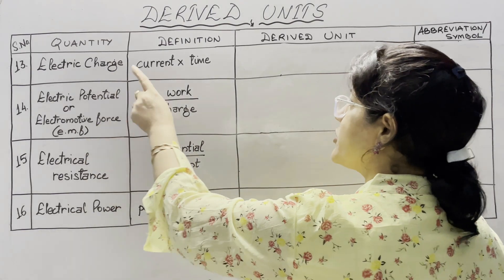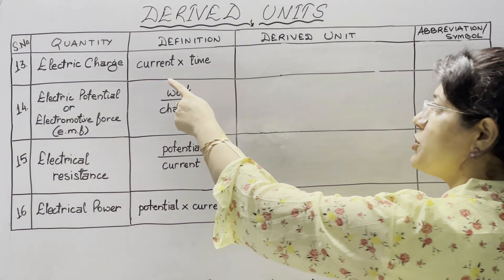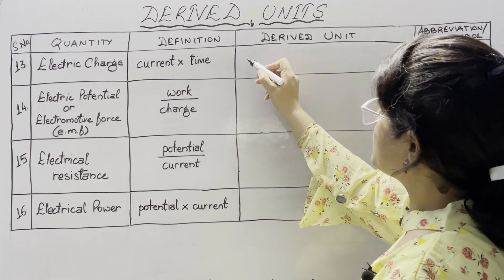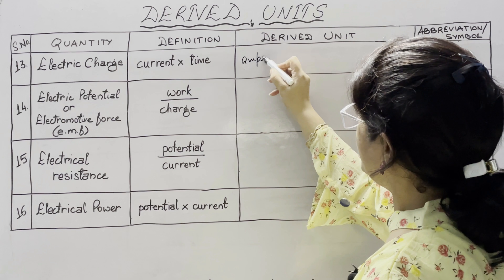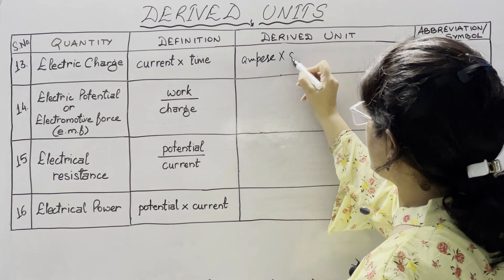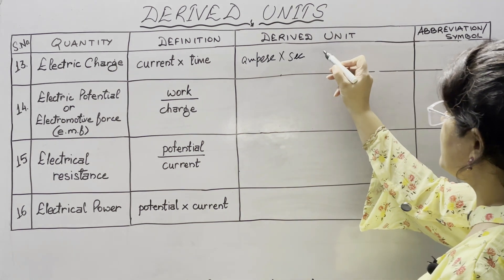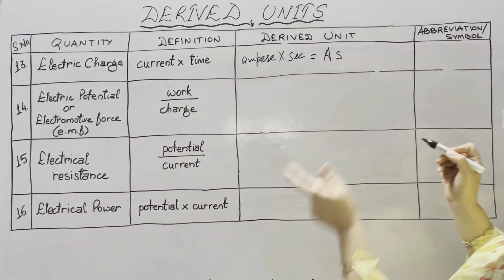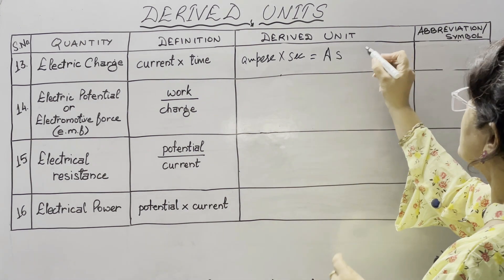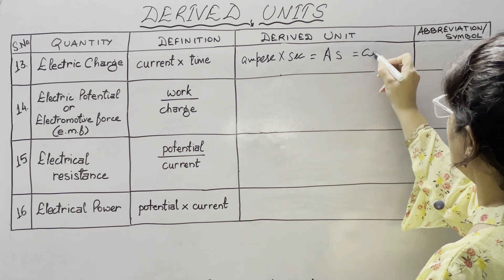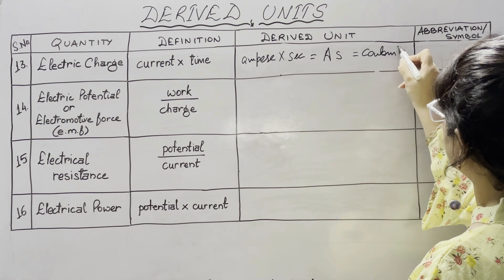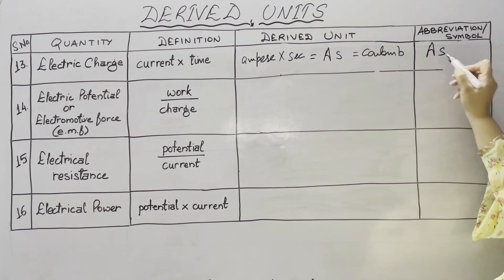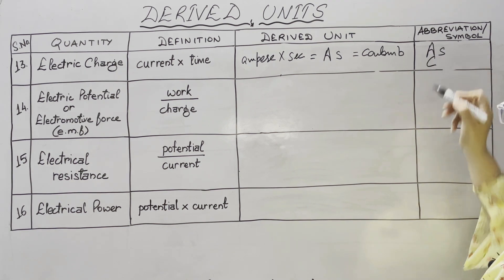The next physical quantity is electric charge. According to its definition, it is the product of current and time. The SI unit of current is ampere and the SI unit of time is second, so the SI unit of electric charge is ampere second. We write it as coulomb, abbreviated as C.